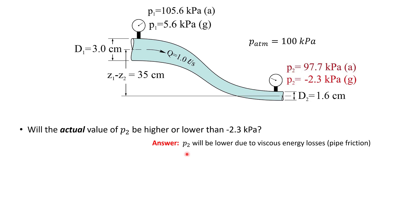These are neglected when we use Bernoulli's equation. So the pressure at 2 could be substantially lower than minus 2.3 kilopascals, for example, if the pipe was very long. You'll learn how to calculate pressure losses in pipes in the next course,